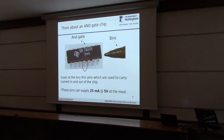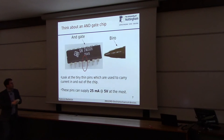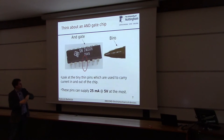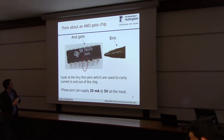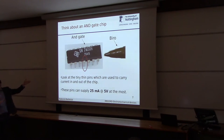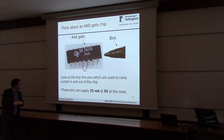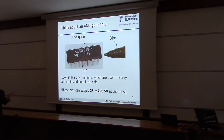Think about electronics and electronic components. I showed you this AND gate or NAND gate - it's very, very small, about the same size as a biro. This thing will deliver, at absolute best, about 25 milliamps at 5 volts. That's the absolute maximum - a very, very small amount of current and voltage.